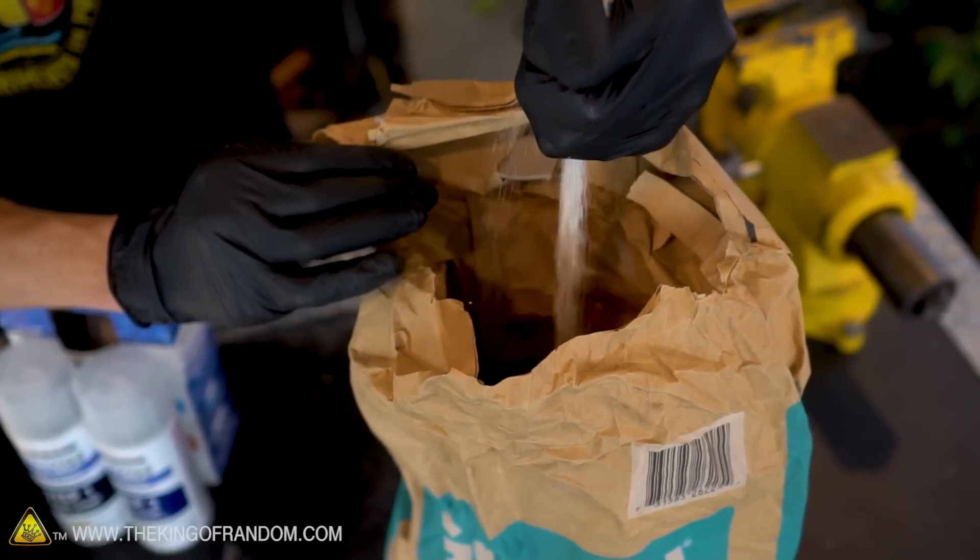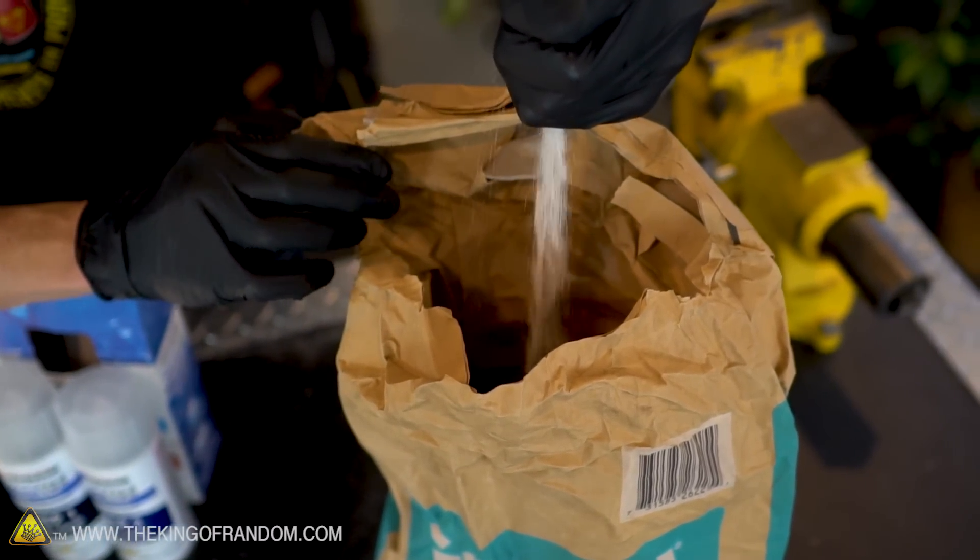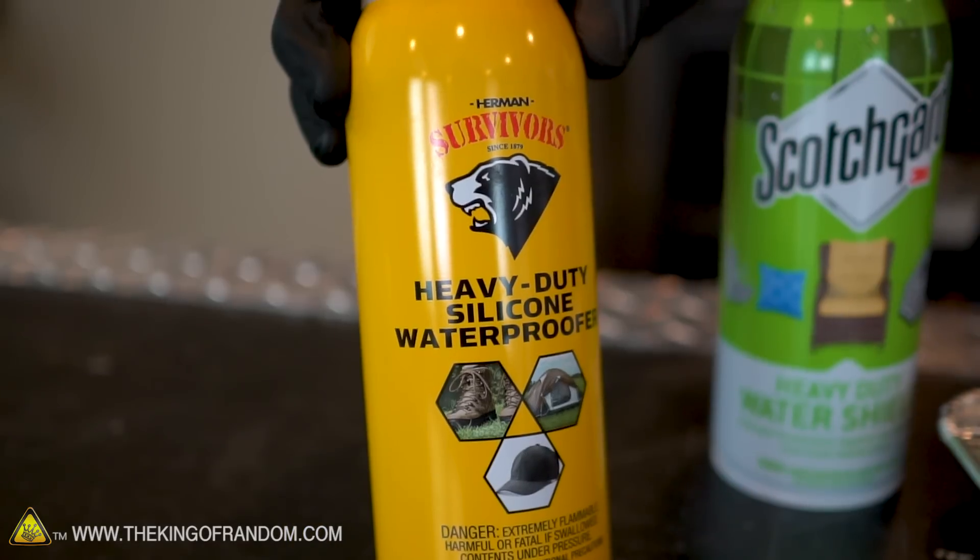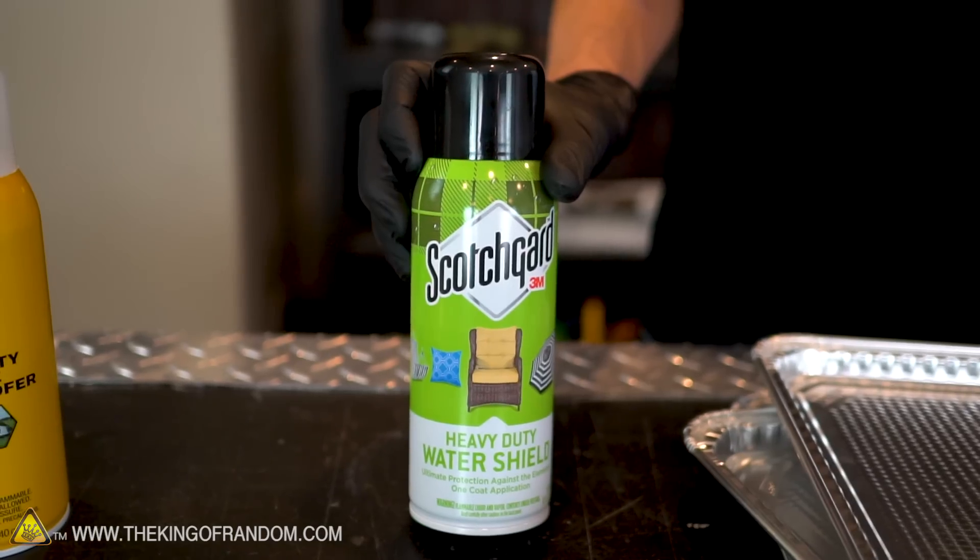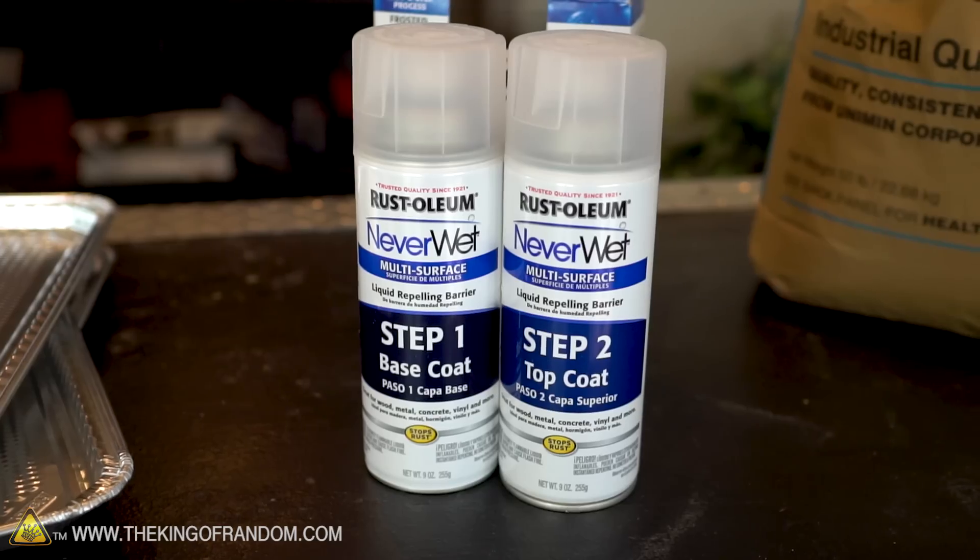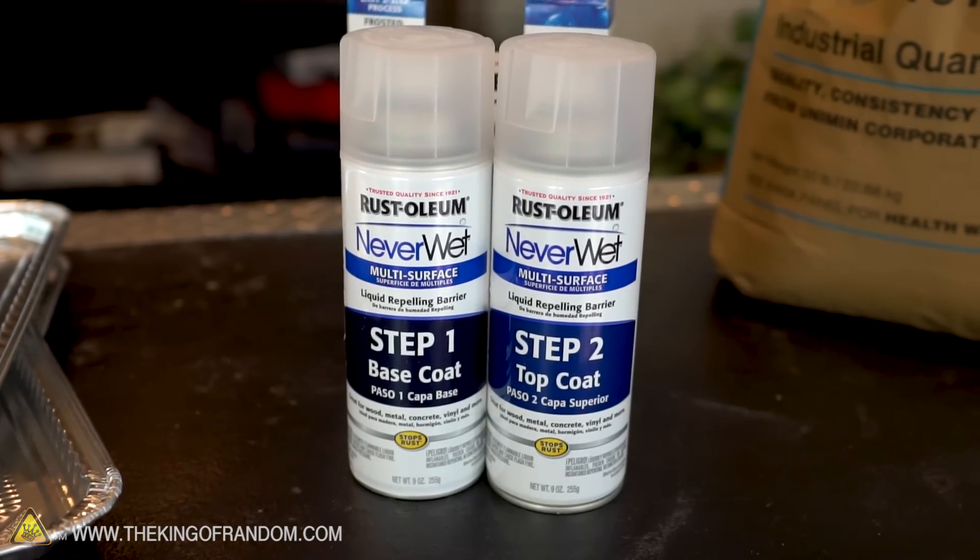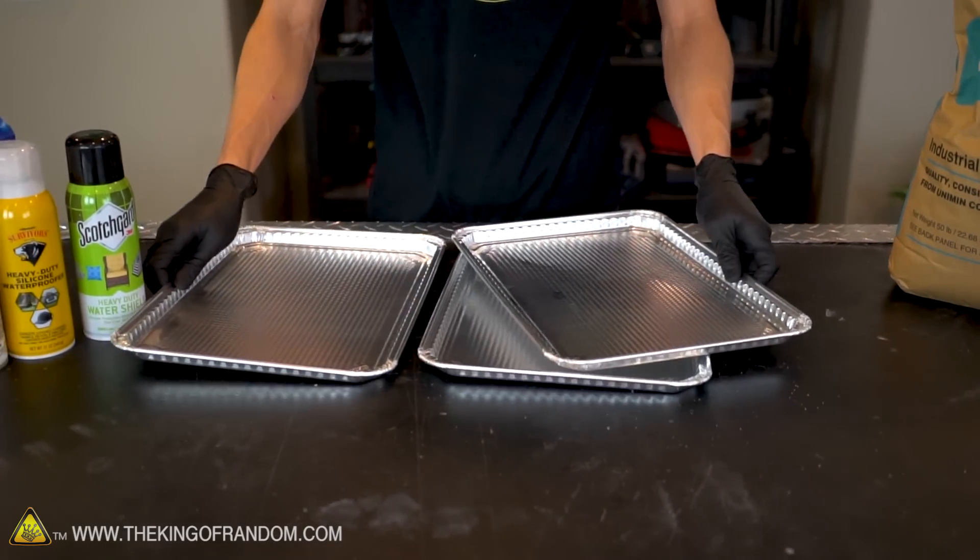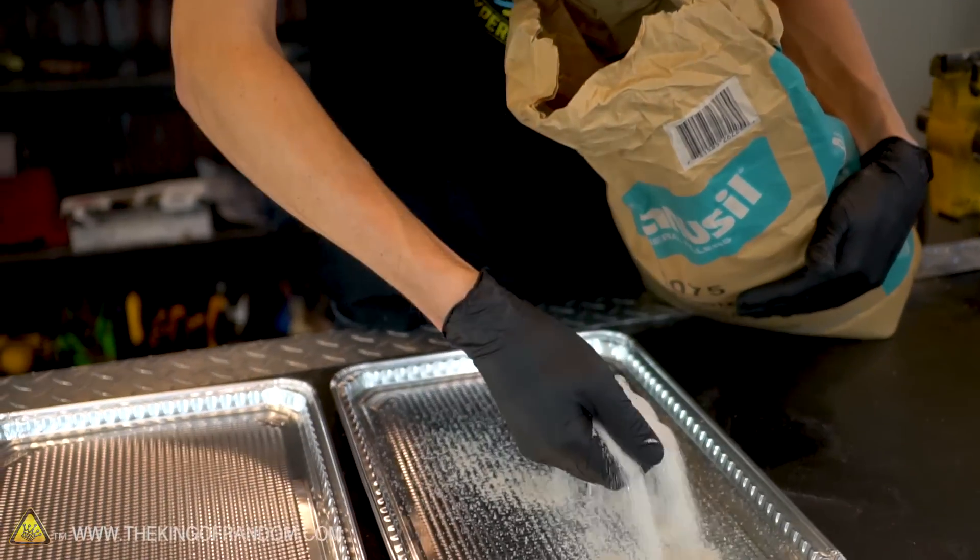There are commercially available versions of this same idea but we want to know if we can make it ourselves. To experiment with this we have a large bag of quartz sand and three different versions of waterproofing that we're going to try applying to the surface of the grains of sand. We have a silicone-based spray, this fabric Scotch guard, and the two-part Neverwet spray. All three of these products are supposed to do a very good job of waterproofing different materials. So let's apply some to three different batches of sand and see which one gives us the most magic.